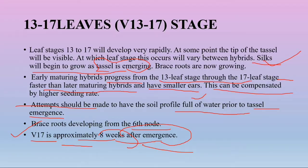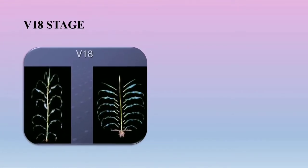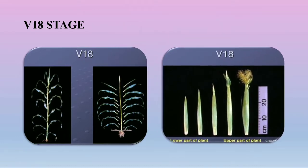At V18, the eighteenth leaf stage, you can observe the collar of the leaf. You can see the lower part and upper part of the plant and how they differ. The upper part of the plant will be displaying silks at this stage of V18.